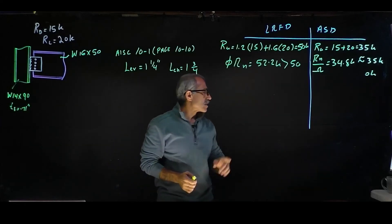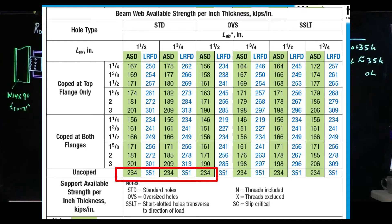If we go to table 10-10 again, in the bottom part of that table you can see it says beam web available strength per inch thickness. So the quantity is given as kip per inch.